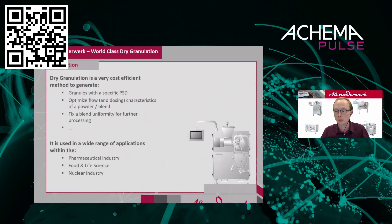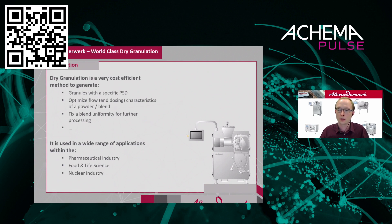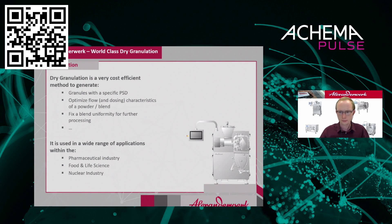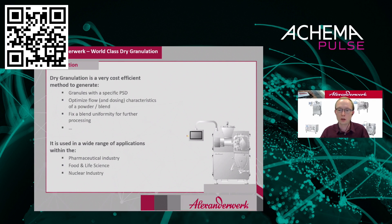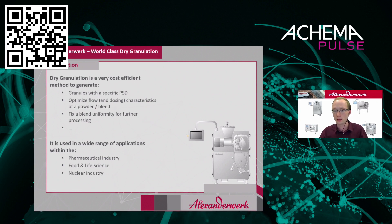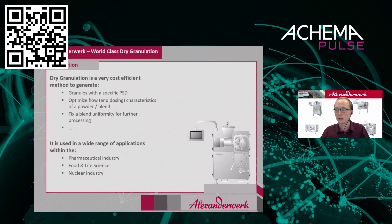I will start with a small motivation on why to use roller compaction, what it is used for, and where it's used. Roller compaction is used to manipulate the particle size of a powder. Usually we turn poor flowing powders into well flowing powders while changing the bulk density and fixing the uniformity of a powder blend. It can also fix a mixture of different powders — for example, in pharmaceuticals for a tablet press — so that it cannot segregate anymore. This technology is often used in the pharmaceutical industry, but also in the food and nuclear industry, as well as in chemical and agricultural industry.